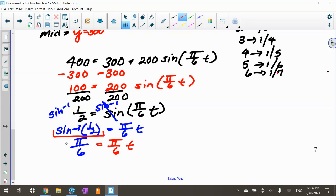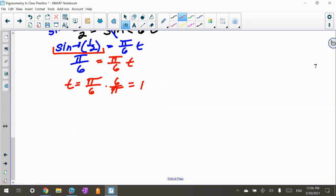Then I'm going to solve for this. So you can divide both sides by π over 6 or multiply by the reciprocal. So t equals π over 6 times 6 over π, which is 1, which is cool, means one day.